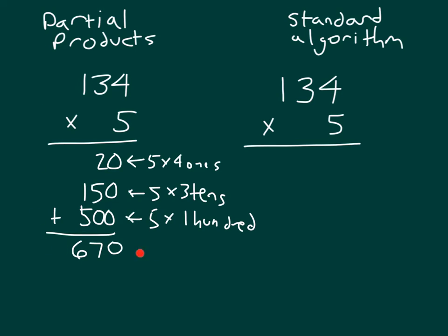This here again is the partial products method. Let's see how it compares to the standard algorithm. With the standard algorithm, we multiply 5 times the 4 to get 20, or 20 1s. We place a 0, and then regroup a 2 into the tens place, because 2 tens, 0 1s, does equal 20.